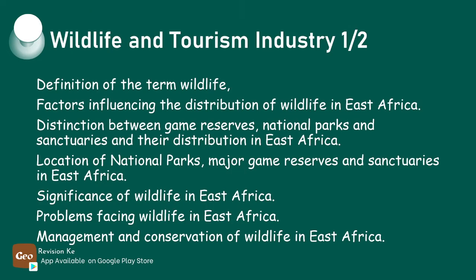So what more can we learn from this topic? Having explained and distinguished the three terms, we should be able to explain the factors that influence the distribution of wildlife in East Africa and tourism in Kenya, and locate national parks and major game reserves and sanctuaries on the map of East Africa.